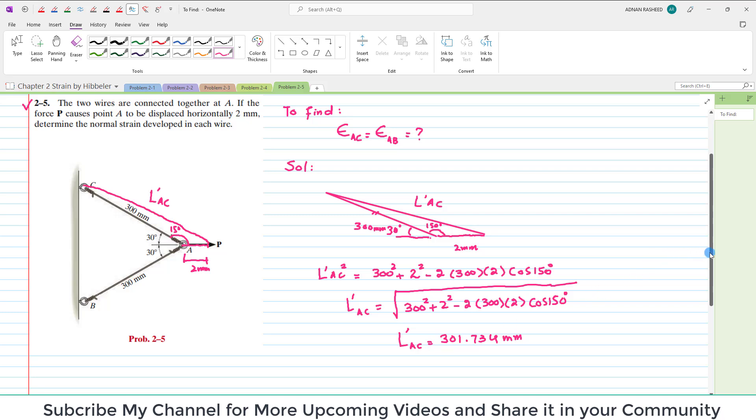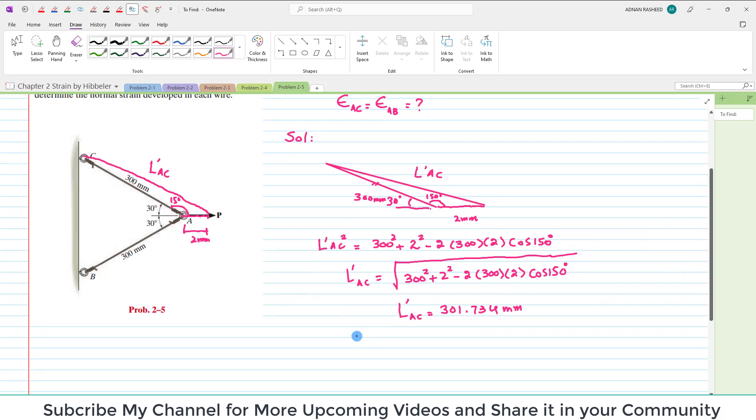Now this is new length. So we know that strain in A C is equal to change in length divided by original length. So change in length is new length minus original length. New length is L dash A C minus original length is L A C divided by original length which is L A C. So we will put the value.